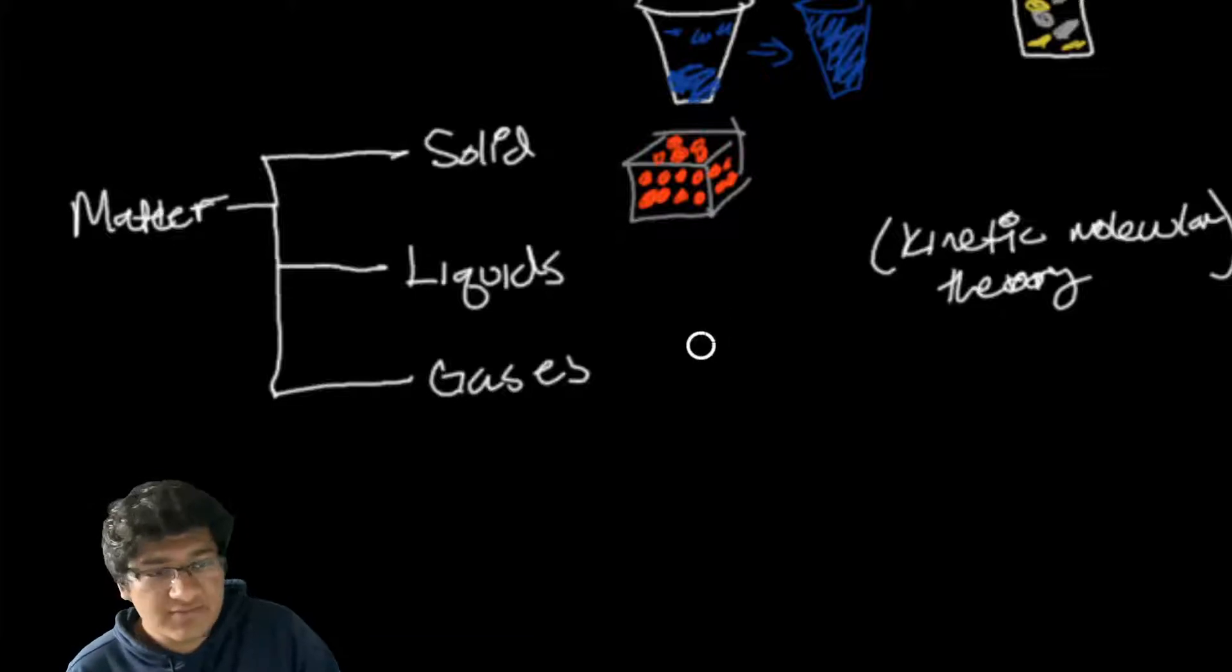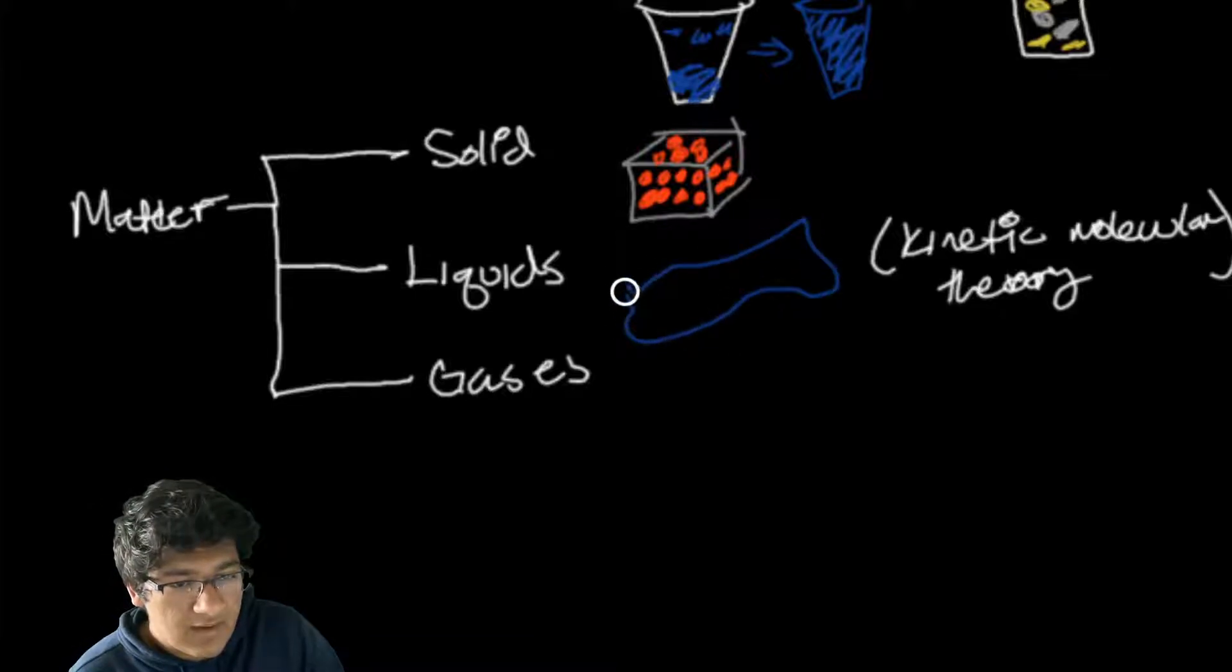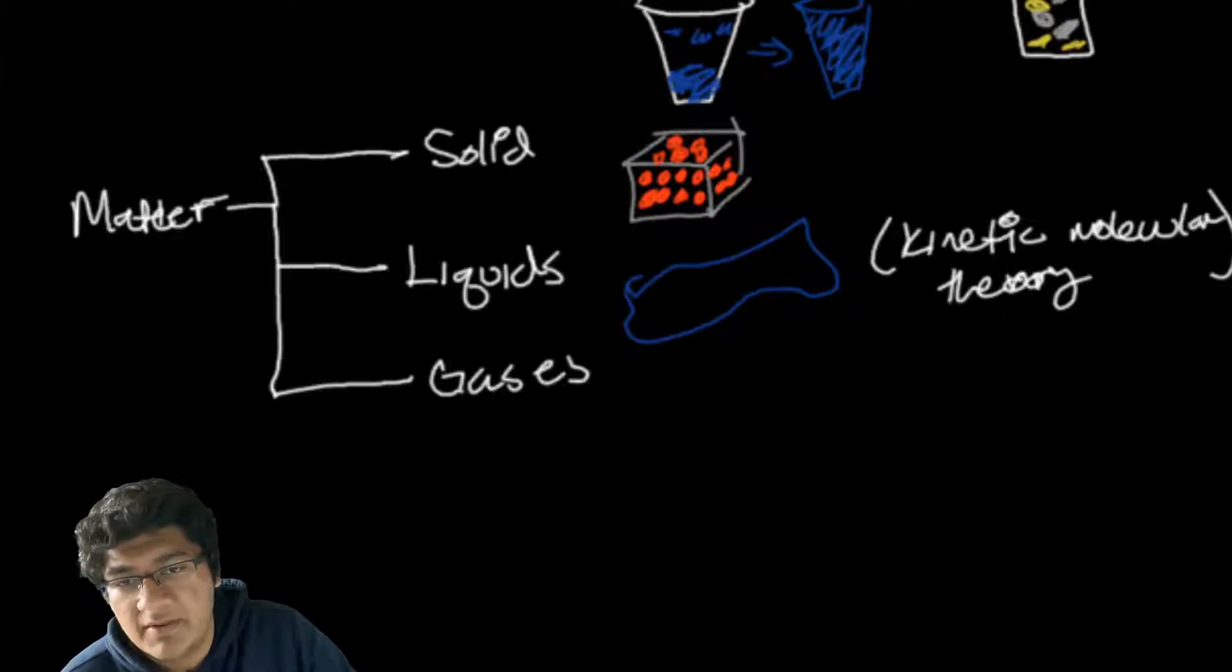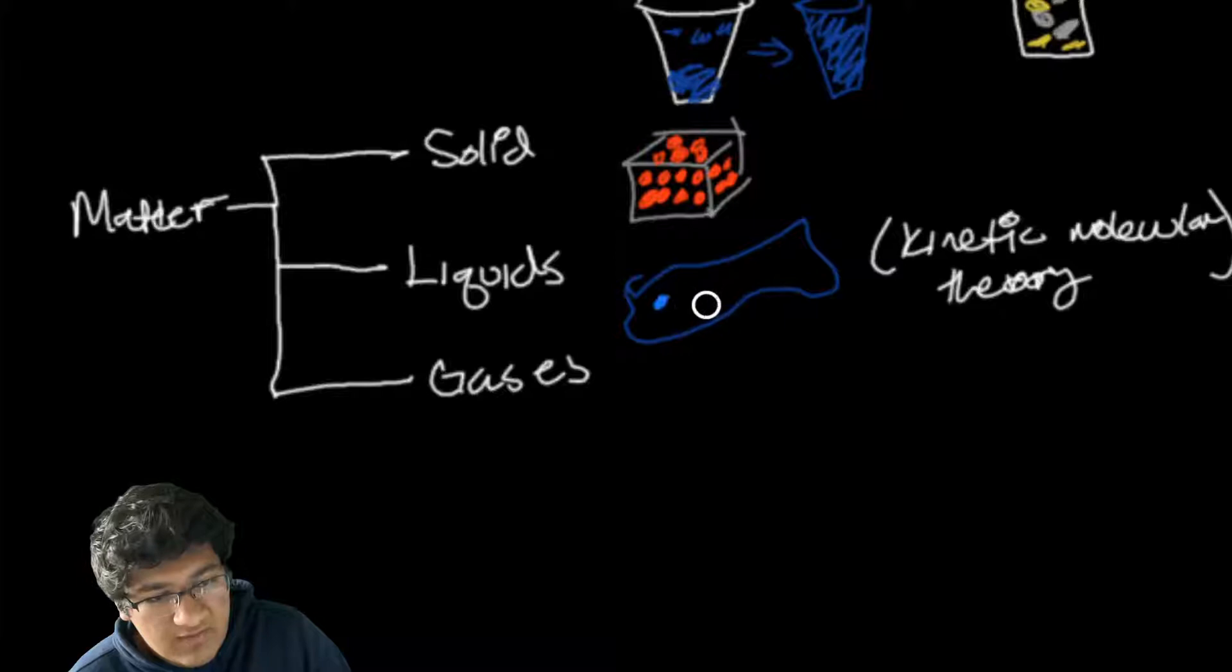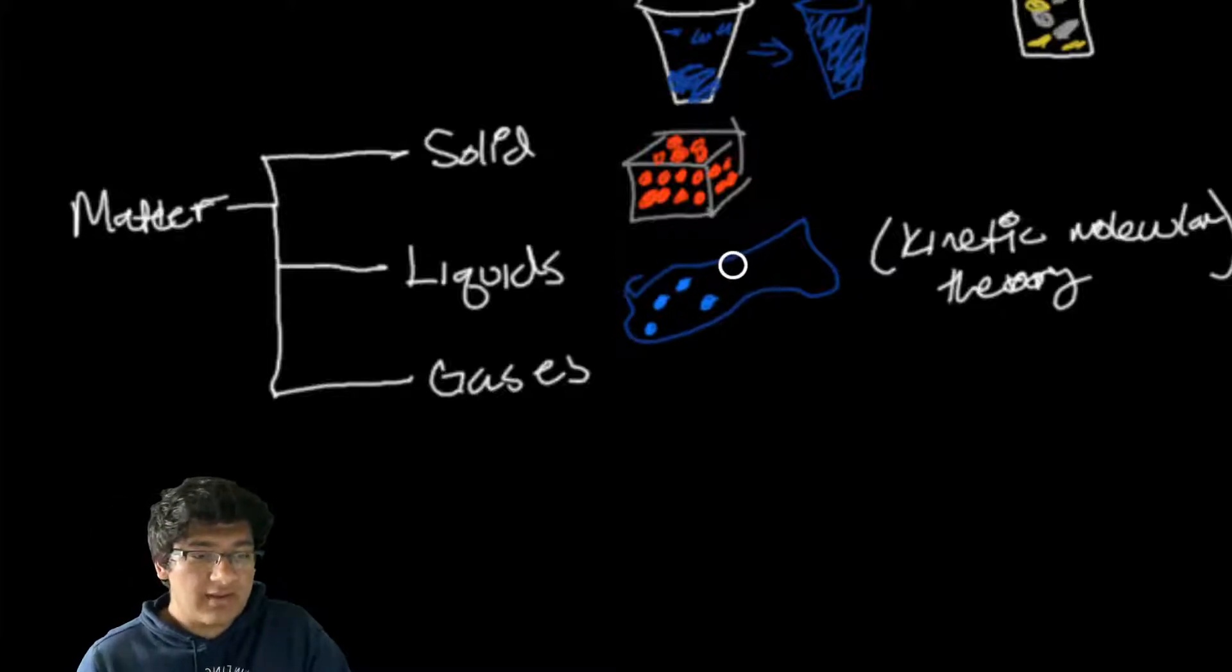On the other hand, we have liquids. Liquids, for example water, are made of H2O molecules. We have more spacing between them, and if there's more spacing between the molecules, they can move around and have more interactions. So there's more kinetic energy in liquids than in solids.